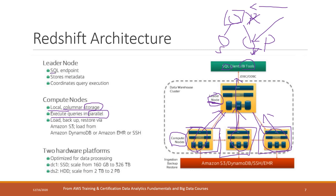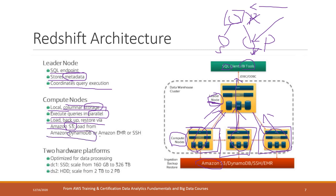The leader node is the SQL endpoint and stores the metadata, meaning it knows which compute node contains which information and coordinates the queries. The compute nodes contain data using column indexing storage and execute queries in parallel. They also load, back up, and store data via S3, which is a data lake.